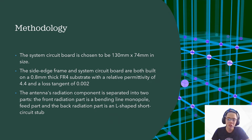For the methodology, the system circuit board is chosen to be 130 mm x 74 mm in size. The side edge frame and circuit board are both built on a 0.8 mm thickness FR4 substrate with a relative permittivity of 4.4 and a loss tangent of 0.002. The antenna's radiation components are separated into two parts: the front radiation part is a band-inline monopole feed part and the back radiation part is an L-shaped short circuit stub.